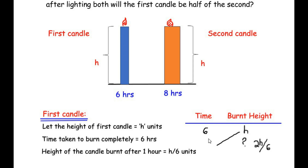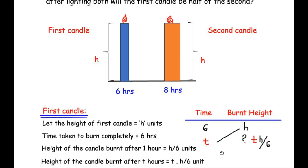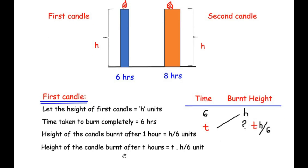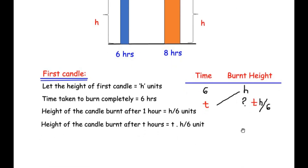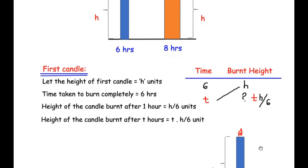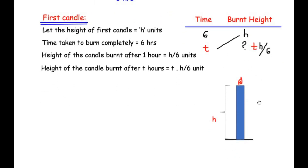So in place of two we replace with t, and the height of the candle burnt after t hours is t times h over six units. Now let us find the remaining height of the first candle. A rough figure of the first candle is drawn — the total height is h.